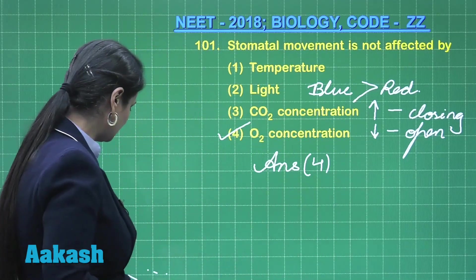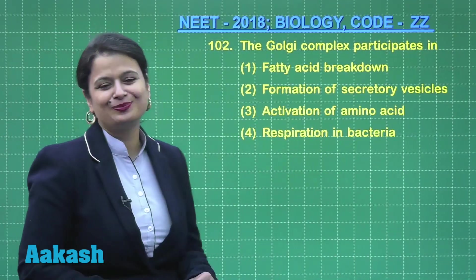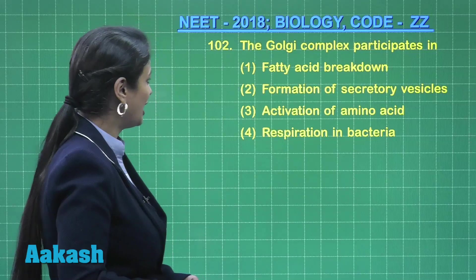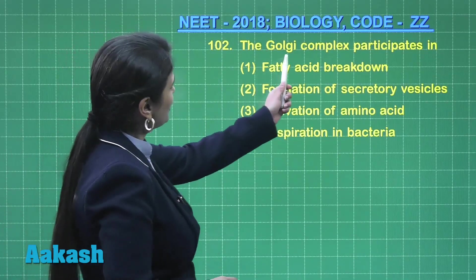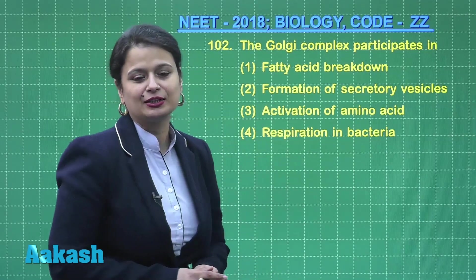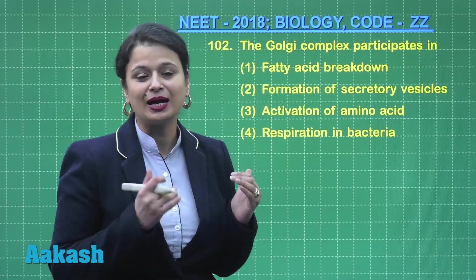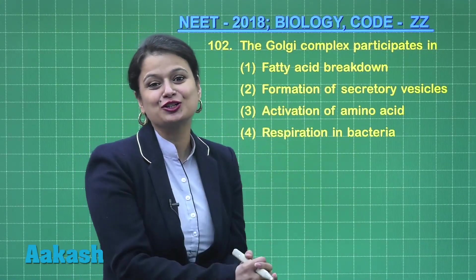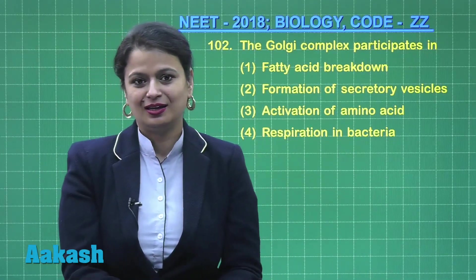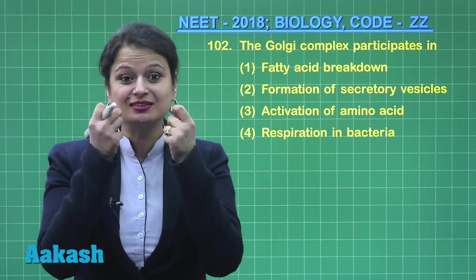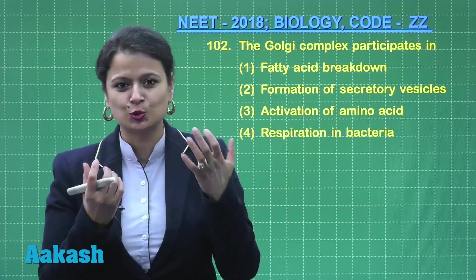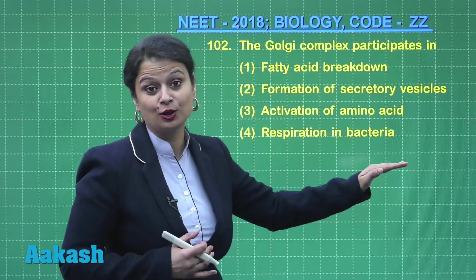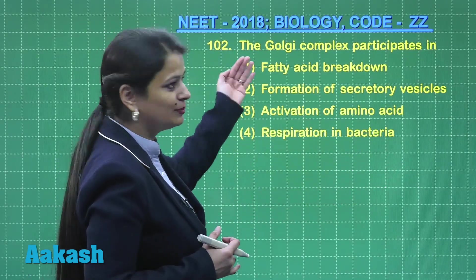Question number 102 is about the Golgi complex, another question from the endomembrane system. Golgi complex participating in fatty acid breakdown is incorrect — fatty acid breakdown is done by mitochondria. Formation of secretory vesicles is an important function of Golgi bodies — it is involved in secretion of tears, mucus, sweat, and digestive enzymes. Activation of amino acids is part of translation and is not done by the Golgi complex.